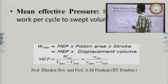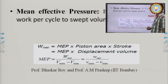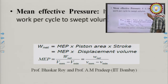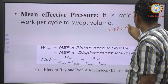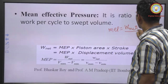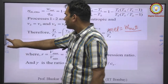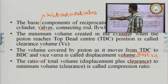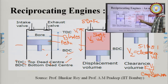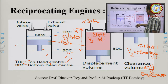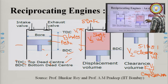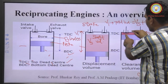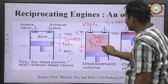The mean effective pressure (MEP) is the ratio of net work per cycle to the swept volume. MEP = W_net / (V₁ − V₂), where V₁ is the total volume and V₂ is the clearance volume, so V₁ − V₂ is the swept volume.